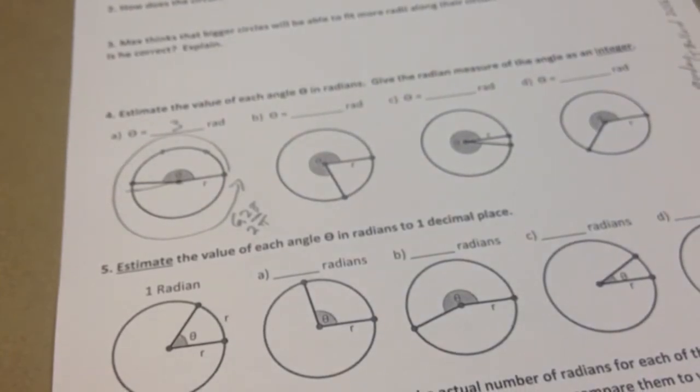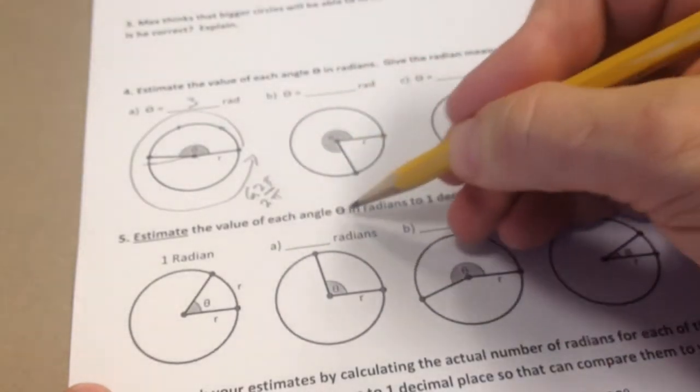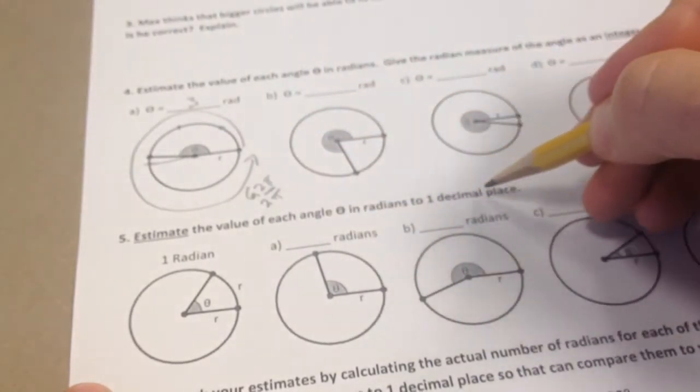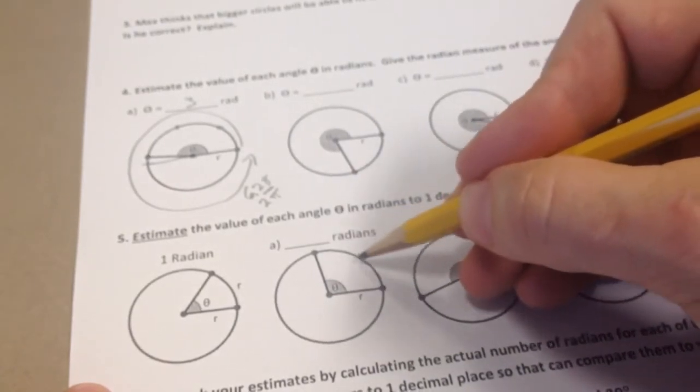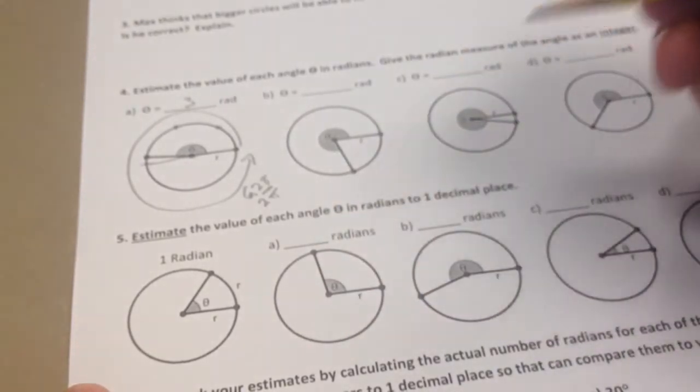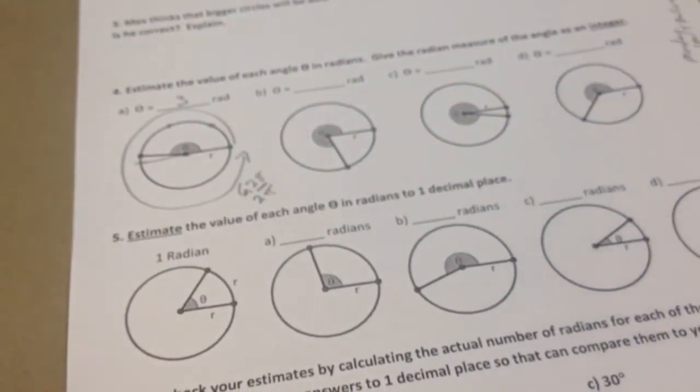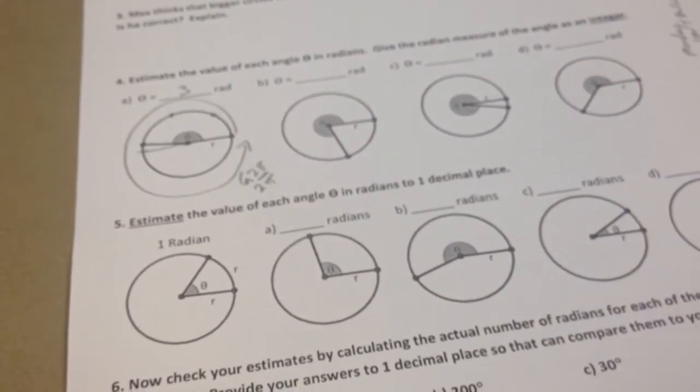Okay, so in the next part, you are supposed to estimate the value of each angle theta in radians to one decimal place. So over here, you're supposed to be a little more like you're not just going to say it's 2, because that's a little bit less than 2. So you're going to have to estimate it, and it's a guess. It's just seeing if you're a good job estimating. Okay, so then we actually, maybe we want to convert. So the question is, you know, how big is that angle?